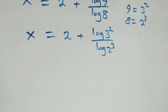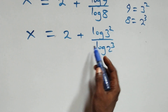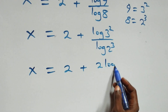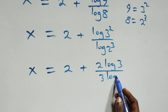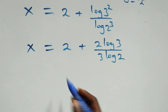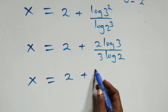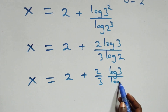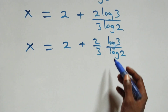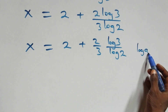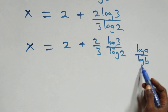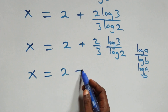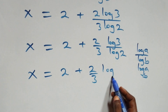Applying the power log rule, the exponents come down: x equals 2 plus 2 log 3 over 3 log 2. This can be rewritten as x equals 2 plus 2 over 3 times log 3 over log 2. Since log a over log b is the same as log a to base b, we have x equals 2 plus (2/3) log 3 base 2.